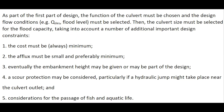As part of the first part of the design, the function of the culvert must be chosen and the design flow condition must be selected. Then, the culvert size must be selected for the flood capacity, taking into account a number of constraints: the cost must be minimum, head loss must be small, the embankment height may be given or may be part of the design, scour protection must be considered, and consideration for the passage of fish or aquatic life may also be relevant.